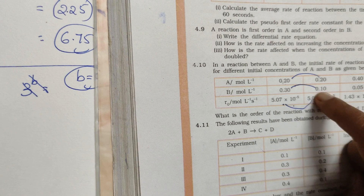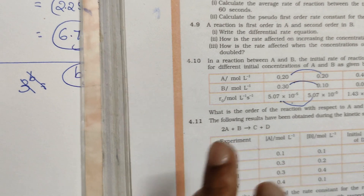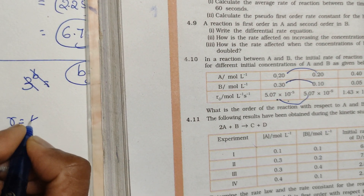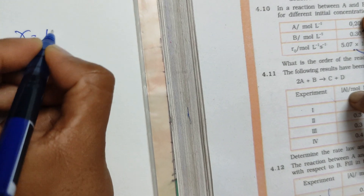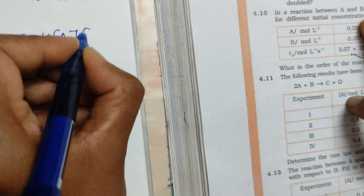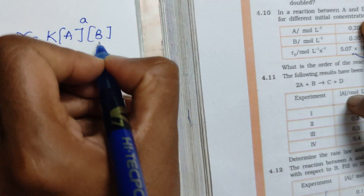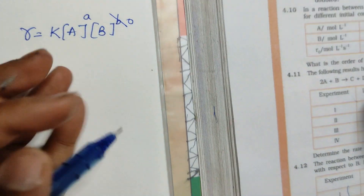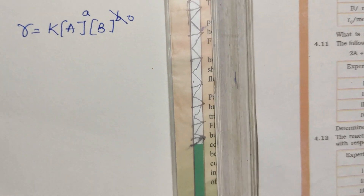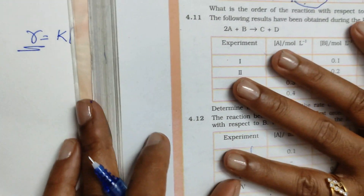Even though you are changing the concentration, there is no change in the rate — which means it is a zero order reaction. So B value is 0. The rate is equal to k into A and B, and you have to find the orders. We already got B value is 0 because even if you change the concentration of B there is no change in the rate.